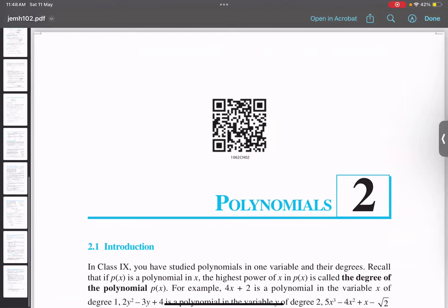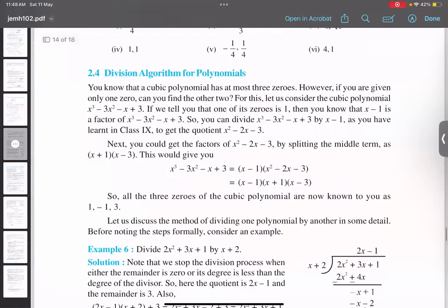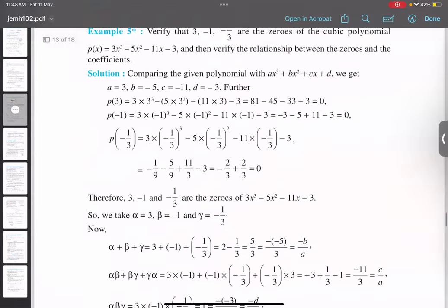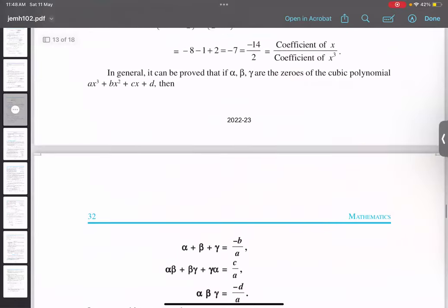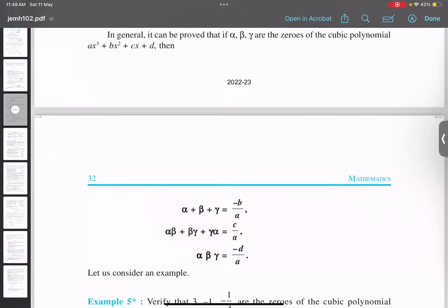So, cubic polynomial topic, what was that? There it is. Can you see this? When there is a cubic polynomial ax³ + bx² + cx + d, alpha, beta and gamma are the three zeros.